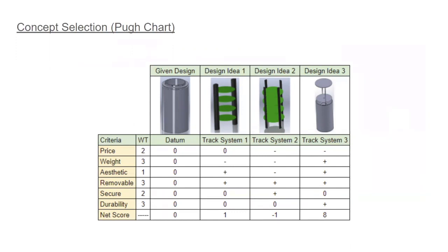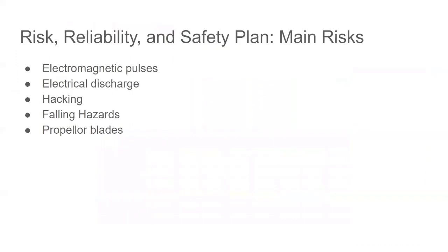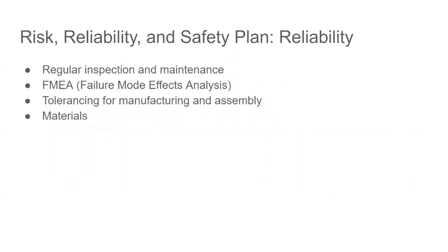Next, I'll talk about the risk, reliability, and safety plan. The main risks with this project includes electromagnetic pulses, electrical discharge, hacking, falling hazards, and the propeller blades. The device emits an EMP pulse that can disable nearby electronics. The device is also attached to a flying drone, so if the drone is flying at high altitudes over populated areas, there is a risk to others below.